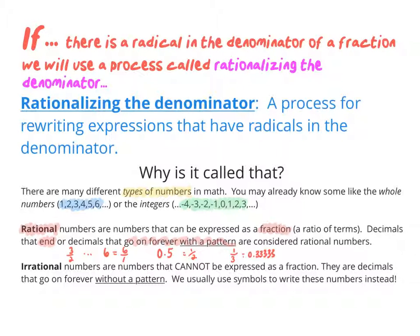So rational numbers are numbers whose decimals either end or repeat with a pattern. If there's a rational number, then there is what we call an irrational number — numbers that cannot be expressed as a fraction. Their decimals go on forever without a pattern. For example, pi is irrational — 3.14159 just keeps going with no pattern. Same with the square root of 2; if you type it into a calculator, you just get decimals that don't follow a pattern.